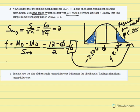Going back to the question — is it likely that this sample mean difference came from a population with mean difference equal to zero — we conclude it is very unlikely. This indicates some treatment effect. The larger the differences between treatments, the more likely it is that we reject the null hypothesis.